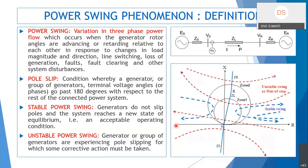A power swing is a variation in three-phase power flow which occurs when generator rotor angles are advancing or retarding relative to each other in response to changes in load magnitude and direction, line switching, loss of generation, excess load, fault happening, fault clearing, and other similar system disturbances.